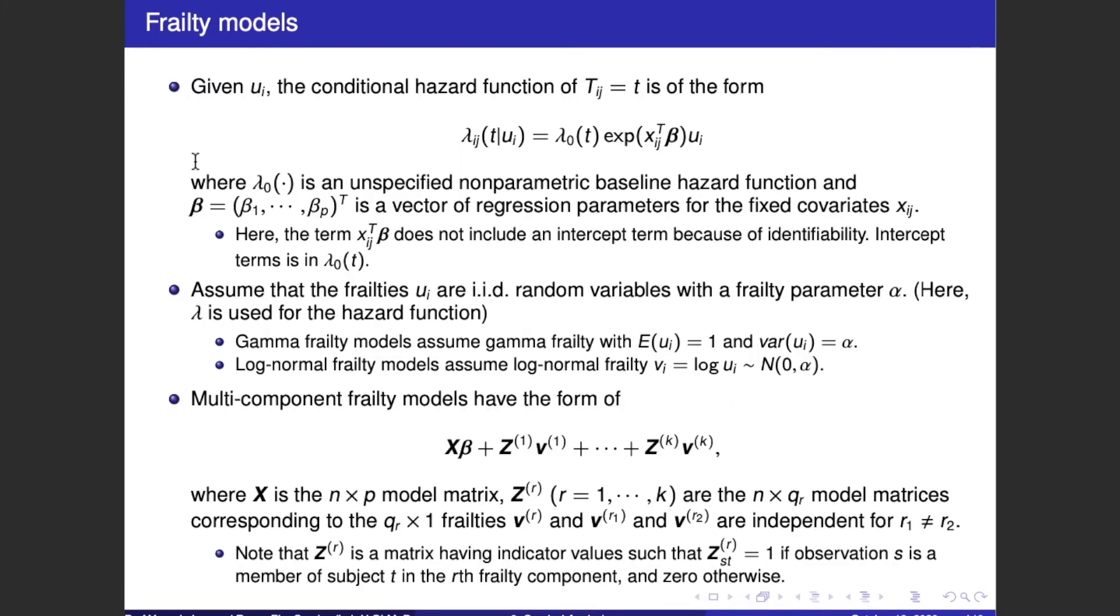Frailty models. Given u_i, the conditional hazard function of T_ig is of the form lambda_ig(t | u_i) equals lambda_0(t) times exp(x_ig transpose beta plus u_i), where lambda_0 is an unspecified nonparametric baseline hazard function, and beta equals (beta_1, ..., beta_p) transpose is a vector of regression parameters for the fixed covariates x_ig. Here, the term x_ig transpose beta doesn't include an intercept term because of identifiability. Intercept terms are in lambda_0(t).